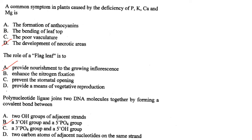A polynucleotide ligase joins two DNA molecules together by forming a covalent bond between the 3' OH group and the 5' phosphate group. Answer is option B.